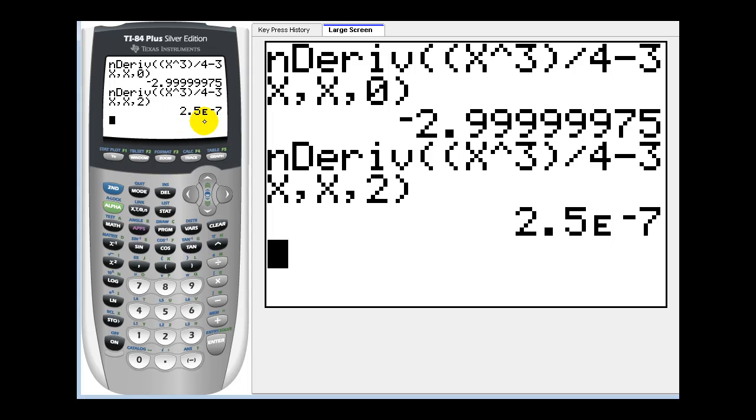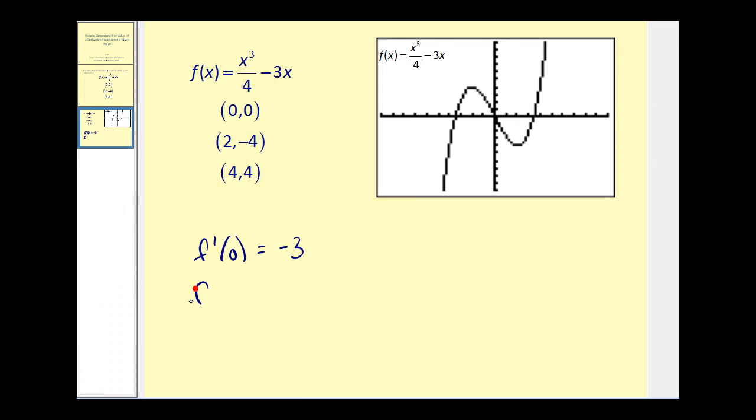This is 2.5 times 10⁻⁷, which is very close to 0. And in fact, that is the value of the derivative at x equals 2. So f'(2) is equal to 0.